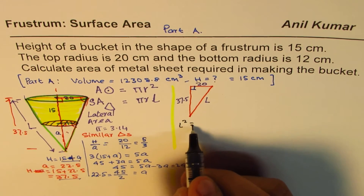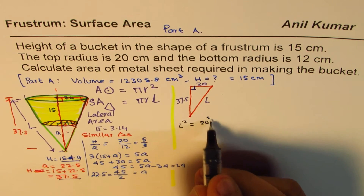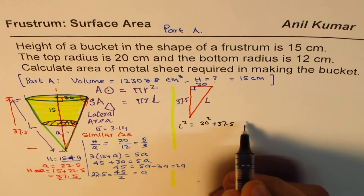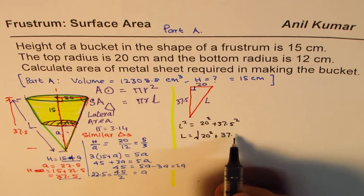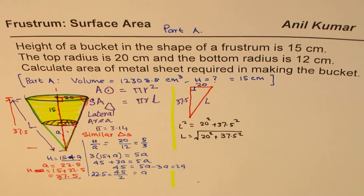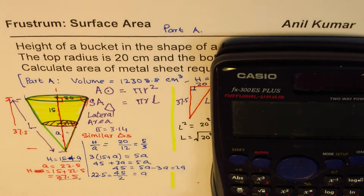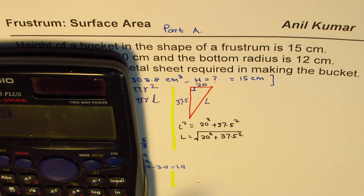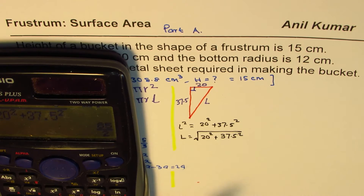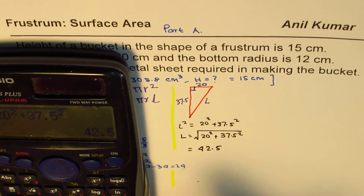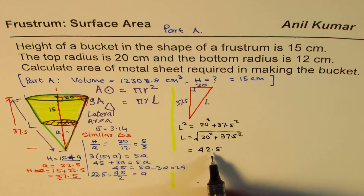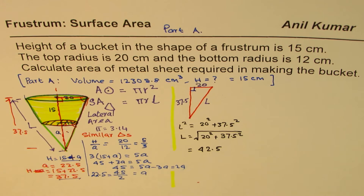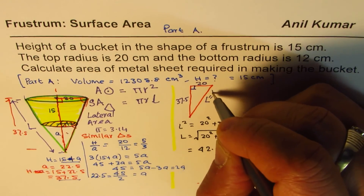Using a calculator: √(20² + 37.5²) = 42.5. All dimensions are in centimeters. So capital L equals 42.5 cm. That was expected — it has to be longer than both sides.